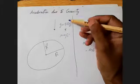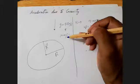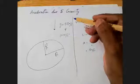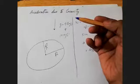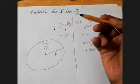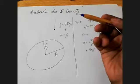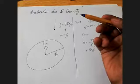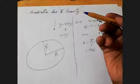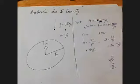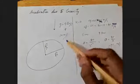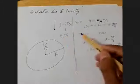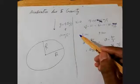Remember: if we are taking these values we have to ignore air resistance. If we are considering air resistance, it will affect this acceleration. For our calculations, we will take g as 10 meter per second squared.